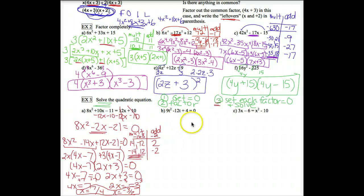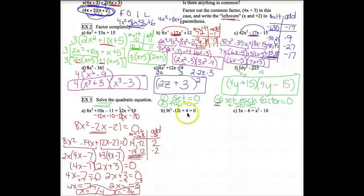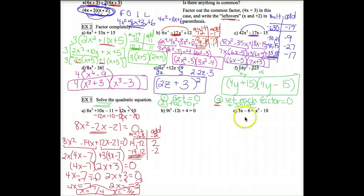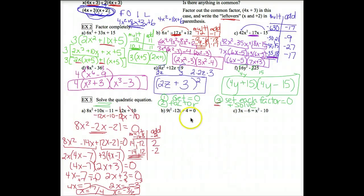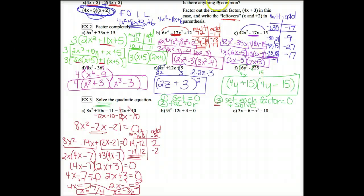These next two are much faster — that one was the hard one because it was the split the middle type of factoring. I would like for you to finish B and C yourself. Do not leave them blank — if you leave them blank I'm going to assume you didn't really listen to this. So please try B and C on your own: get them equal to 0 if they're not already, then factor, then set each factor equal to 0 and solve. We will talk about those in class tomorrow.